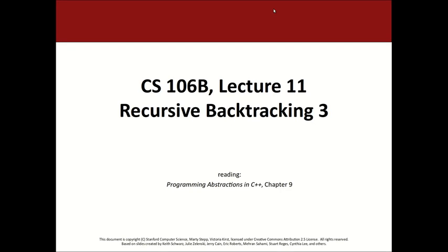Tell me something about recursive backtracking. What do those algorithms usually look like? What sort of steps do you typically see? For each possible option, select an option, see what it does, and then un-choose it. I use this 'choose, explore, un-choose' vocabulary — what you said is identical, basically. That's typically the idea.